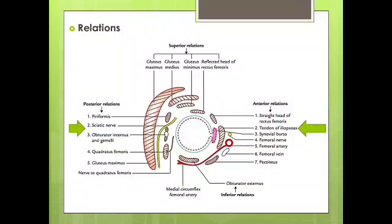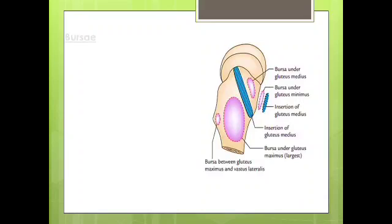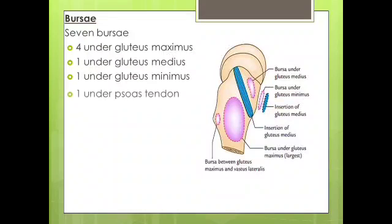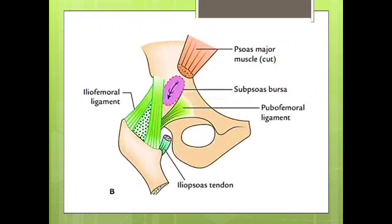Superiorly, there is gluteus maximus, gluteus medius, gluteus minimus, and reflected head of rectus femoris. Inferiorly, there is only the obturator externus muscle. There are seven bursae around the hip joint, of which four are under gluteus maximus, one under gluteus medius, one under gluteus minimus, and one under the psoas tendon. The sub-psoas bursa can be seen between the iliofemoral and pubofemoral ligament, above which is the cut part of the psoas tendon.